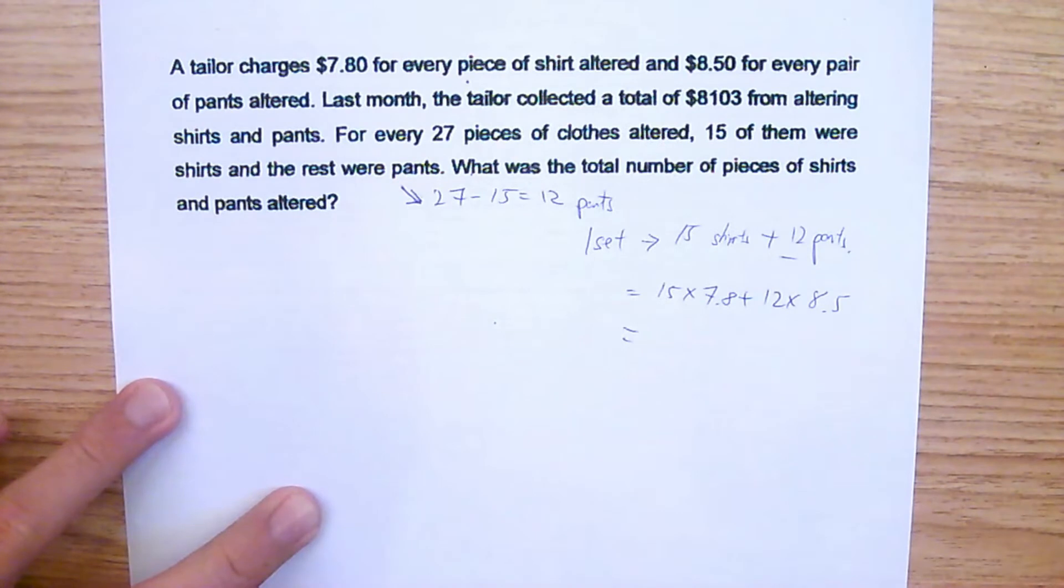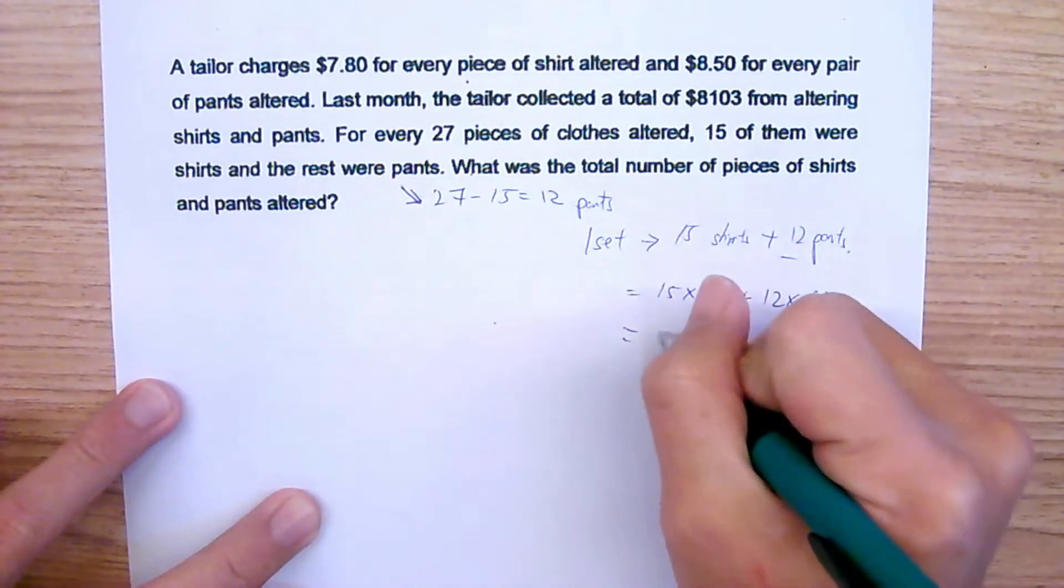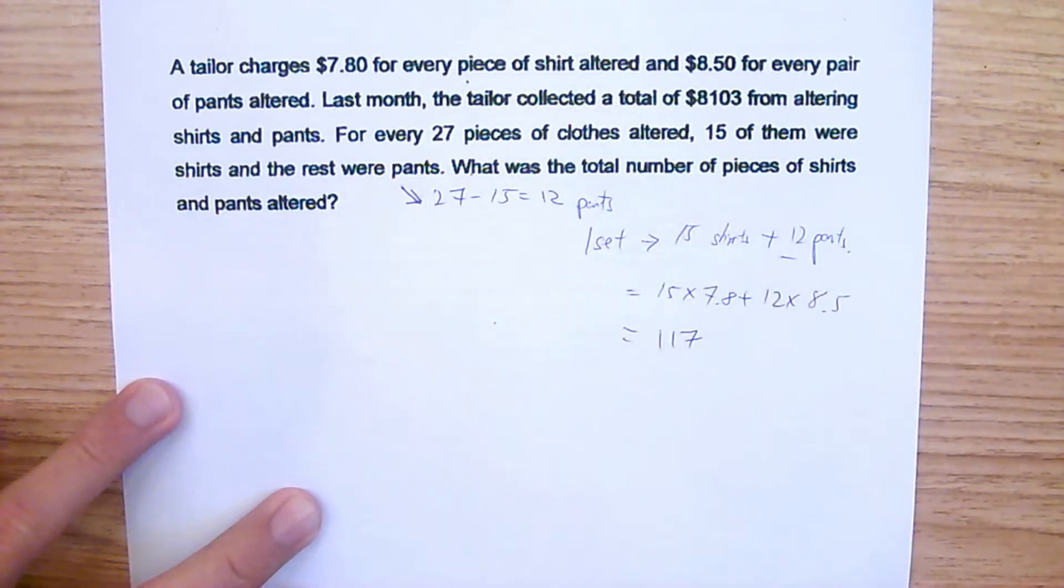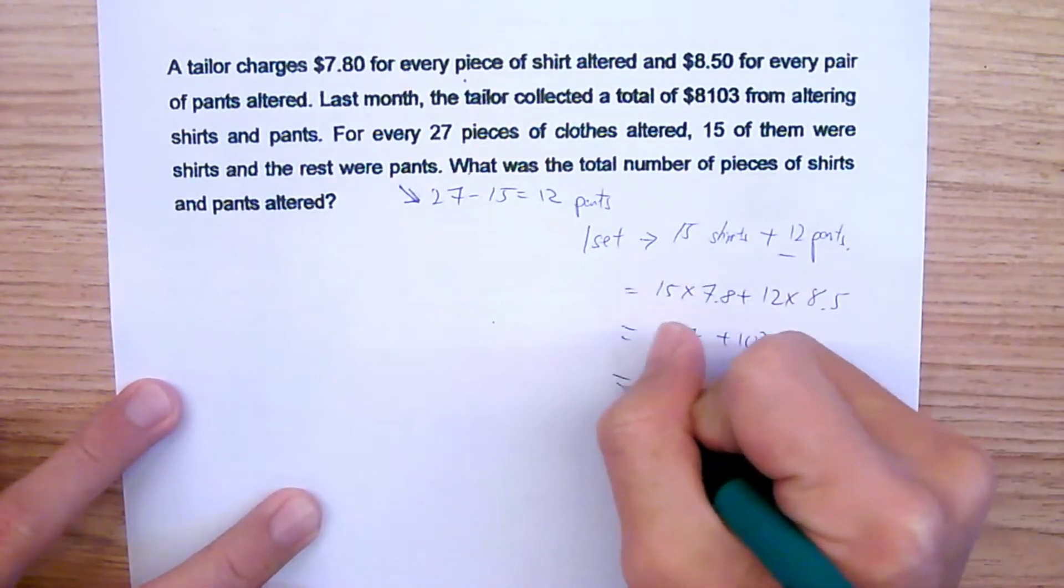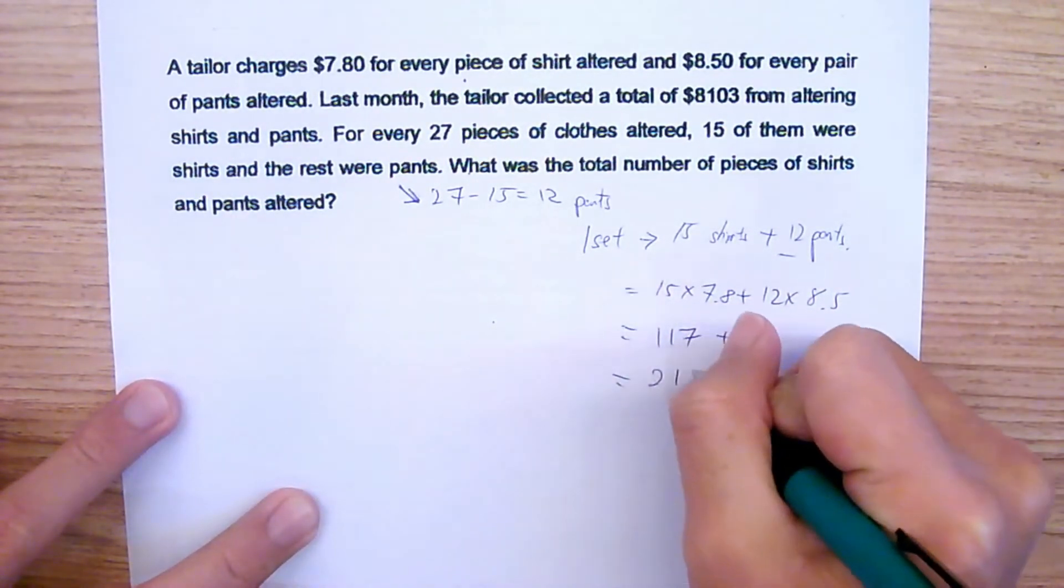Where is my calculator? So 15 multiplied by 7.80—that will give us 117. Then we have 12 multiplied by 8.50, and that will give us 102. So if you add all these up together, you're going to get $219.